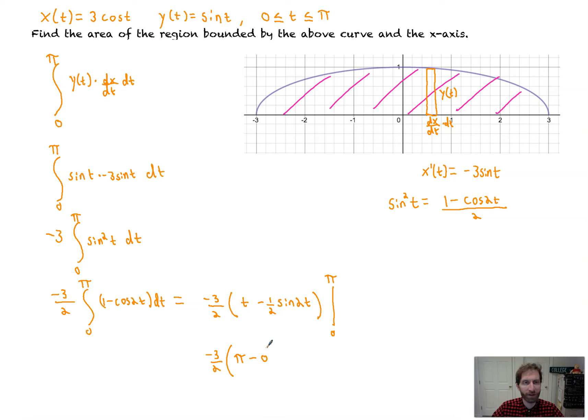So we get π minus, this will be (1/2)sin(2π) is 0. Interesting. Very interesting what's happening here. I'm going to explain what's going on in a second. And then we've got the 0 coming in here. Sin(0) is 0. We end up with negative 3π/2.